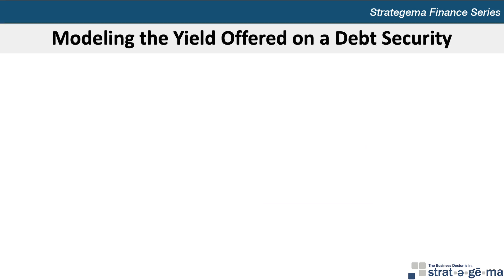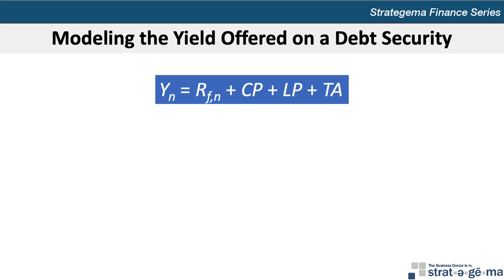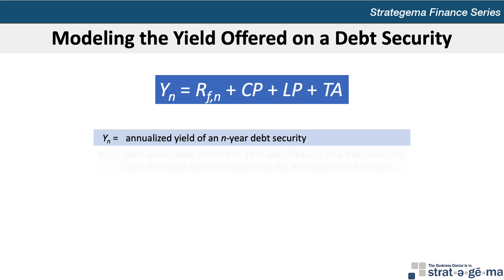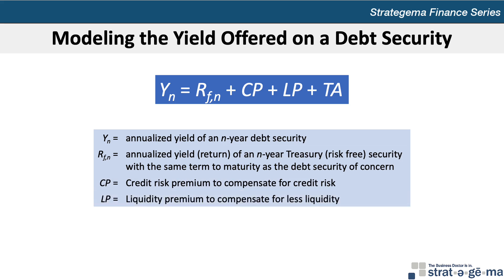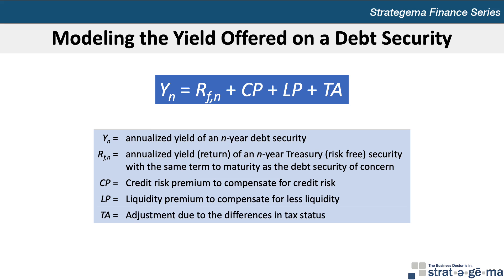When a company wants to issue debt, it needs to consider all the characteristics discussed to determine the appropriate yield to offer that will entice investors. The yield model states that the annualized return of an N-year debt security (YN) equals the annualized yield of an N-year treasury risk-free security with the same term to maturity (RFN), plus the credit risk premium (CP), plus the liquidity premium (LP), plus the adjustment for the difference in tax status (TA). The appropriate yield will change over time because of changes in the risk-free rate, credit risk premium, liquidity premium, and tax adjustment factors.